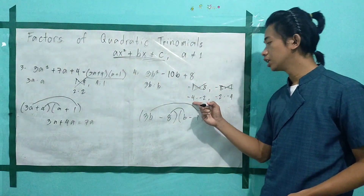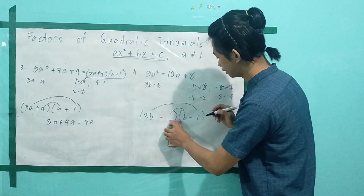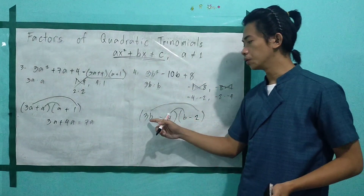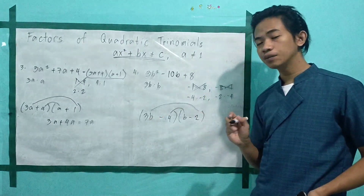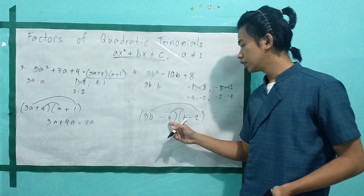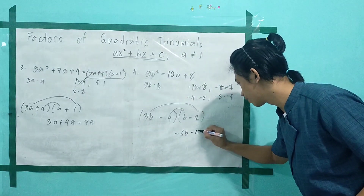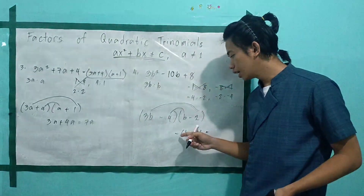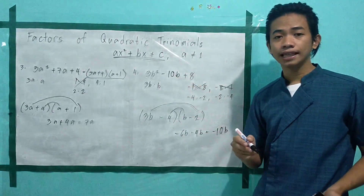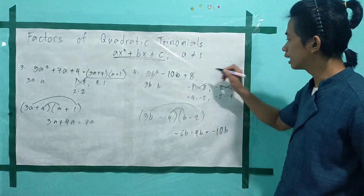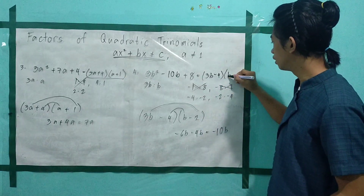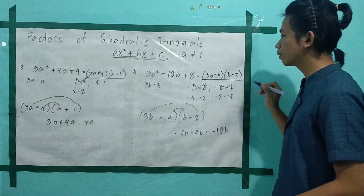Try (3b − 4)(b − 2): 3b times negative 2 gives negative 6b, and negative 4 times b gives negative 4b. Their sum is negative 6b minus 4b, which equals negative 10b. Same as our middle term? Yes. Therefore, the factors are (3b − 4)(b − 2).